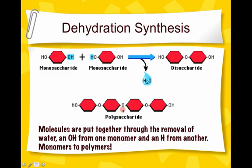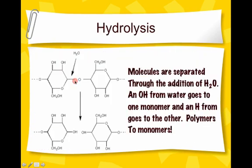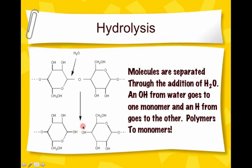If we count here, we have one, two, three bonds that have been formed, which means three water molecules have been pulled out. The reverse of this is called hydrolysis — lysis means to break, and hydro means water, so hydrolysis means to break with water. A water molecule comes in and breaks apart a bond in the polymer, and what it produces are the individual monomers. Hydrolysis is the process of turning polymers into monomers by breaking with water.